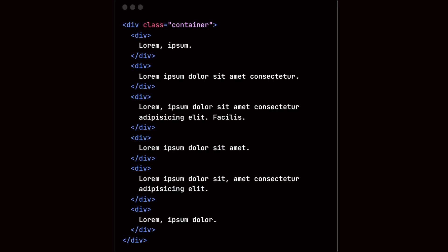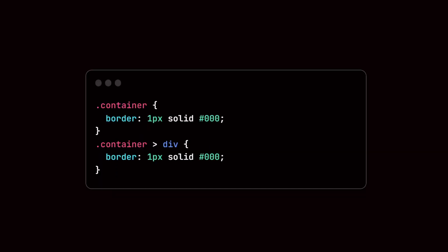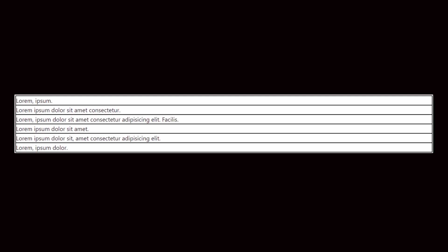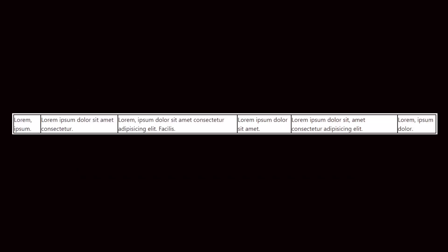Let's start by debunking the common myth about flex and grid being limited to 1D and 2D layouts. We would be using the following HTML and add some CSS to make the bounds of the elements visible. On adding display flex to the CSS, the elements align themselves in a row.